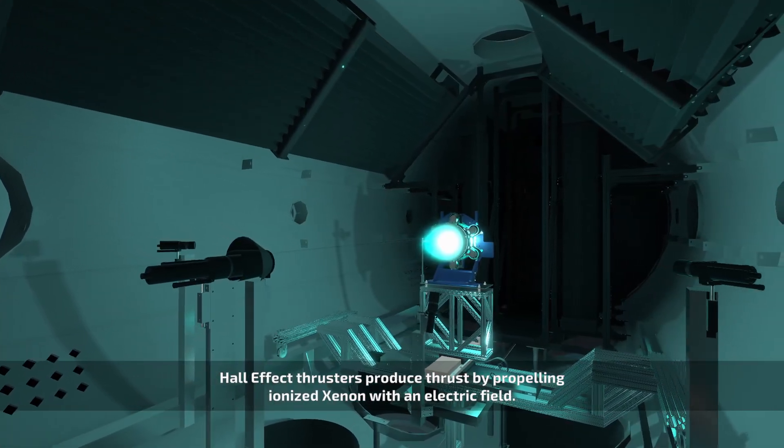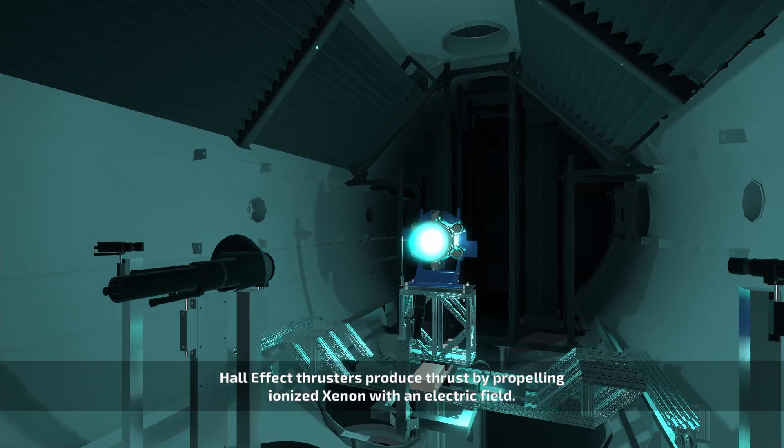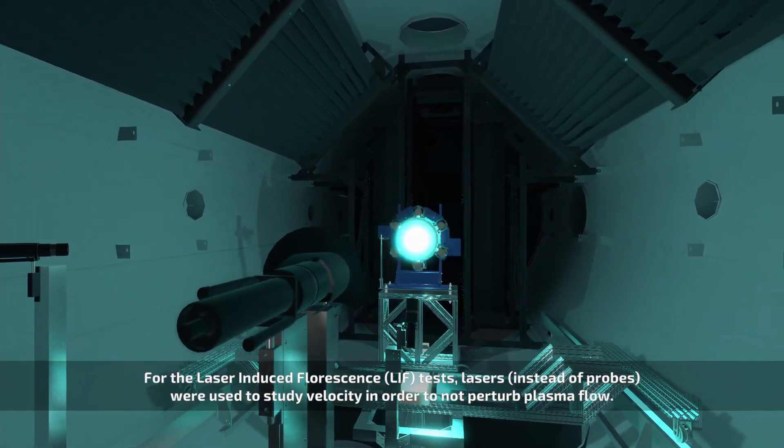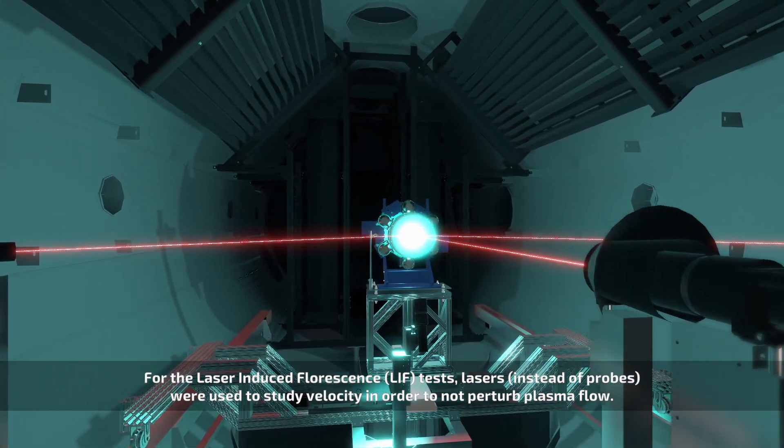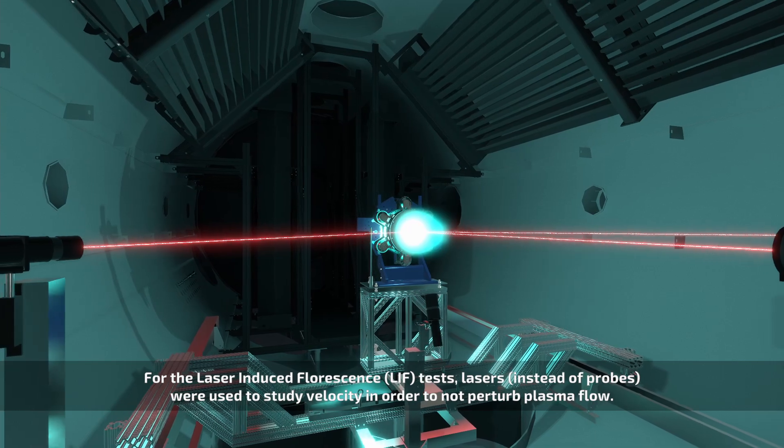Hall effect thrusters produce thrust by propelling ionized xenon with an electric field. For the laser-induced fluorescence test, lasers instead of probes were used to study velocity in order to not perturb plasma flow.